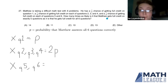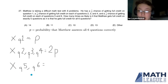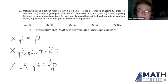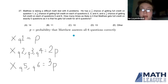Similarly, with questions five and six, Matthew had a one-fourth chance of getting each one correct. If we swap one of them and say he got exactly one incorrect, the probability changes from a one-fourth chance of getting that question correct to a three-fourths chance of getting it incorrect, increasing the probability by a factor of three — so three p.